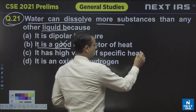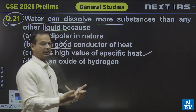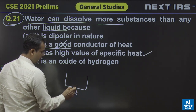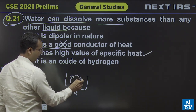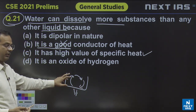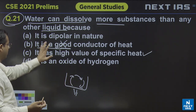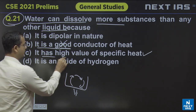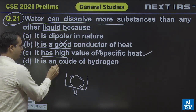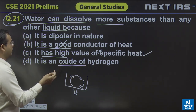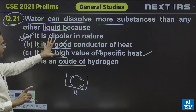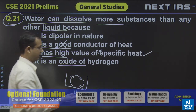Water has a high specific heat value but that does not mean it can conduct heat very well. Whatever heat is conducted in water is conducted through the process of convection — the water molecules actually move. So the actual conduction of heat in water is through convection. This is a wrong statement. Another option — water is an oxide of hydrogen — is an irrelevant statement. By the process of elimination you can arrive at the correct answer.